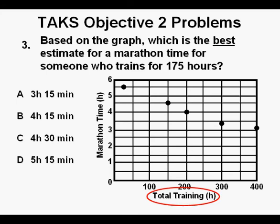Here we have a graph showing total training hours on the horizontal axis. With respect to marathon times on the vertical or dependent variable axis, we are asked to estimate the marathon time of someone who has trained for 175 hours. We should notice that for each vertical line segment, it represents 50 hours of training. So 175 hours is halfway between the 150 hour and the 200 hour lines, and here it is marked in red vertically between 150 and 200.